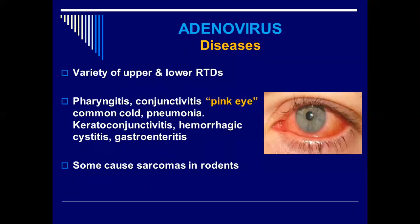The diseases of the adenoviruses include a variety of upper and lower respiratory tract infections. There is pharyngitis, conjunctivitis — the characteristic pink eye — common cold, and pneumonia. There is also keratoconjunctivitis, hemorrhagic cystitis, and gastroenteritis.